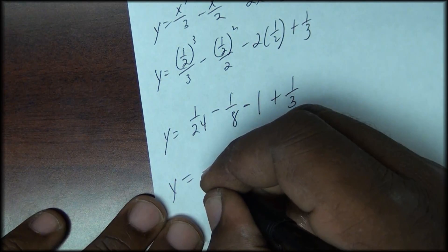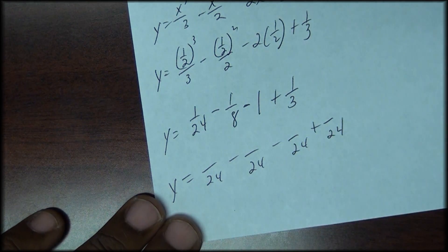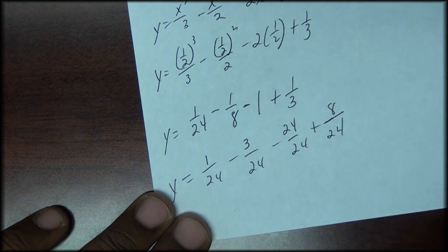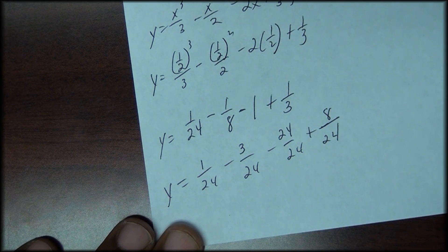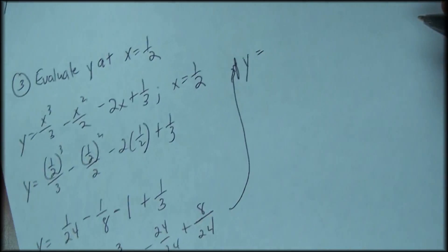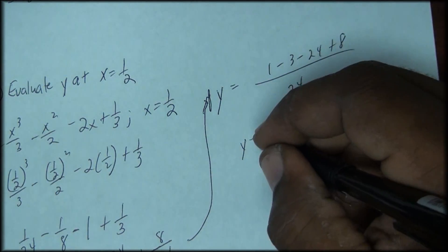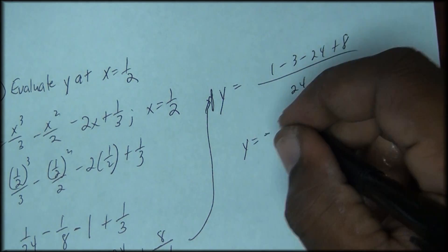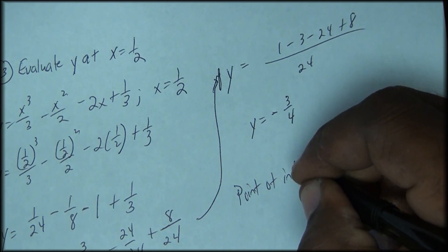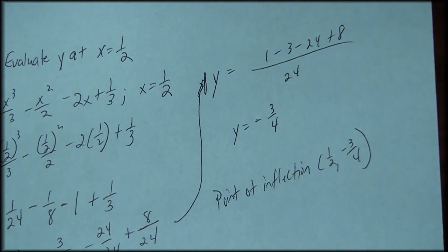Finding the least common denominator, which is 24, and making equivalent fractions, we reduce and get negative three-fourths. So our point of inflection occurs at the coordinates one-half and negative three-fourths.